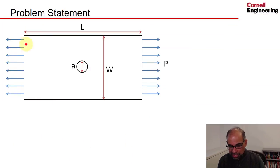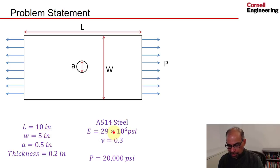I'll go to my slide to review the problem statement. We're given a plate with a hole, and we're given the length of the plate, the width of the plate, the diameter of the hole, and it's subjected to some force. The dimensions are given over here. We're given the material as A514 steel—this is the Young's modulus, this is the Poisson ratio—and we are also given the load in terms of force per unit area, so it's 20,000 psi.